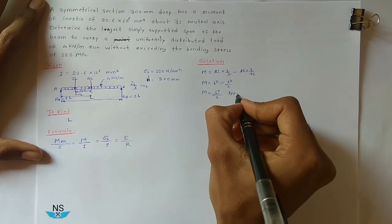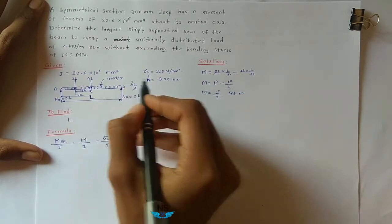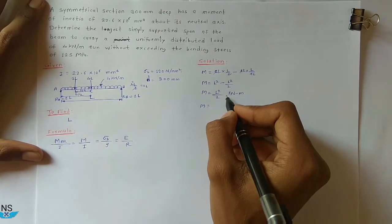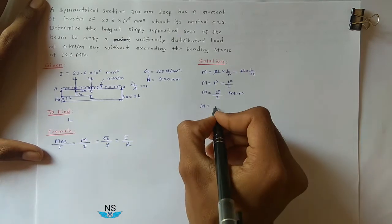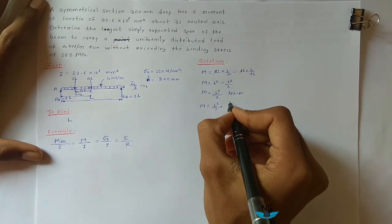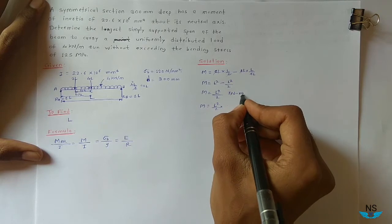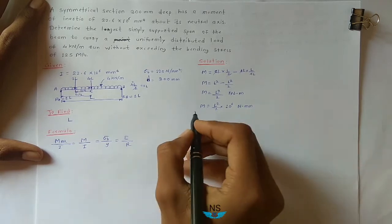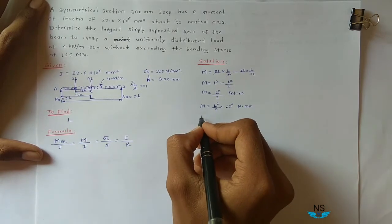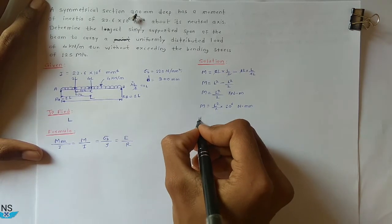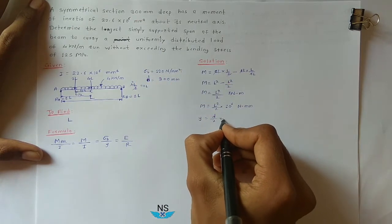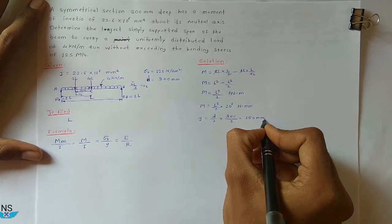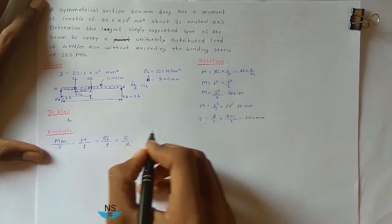So M = L²/2 kN·m. Converting to Newton-mm: M = (L²/2) × 10⁶ N·mm. Now Y = D/2 = 300/2 = 150 mm.